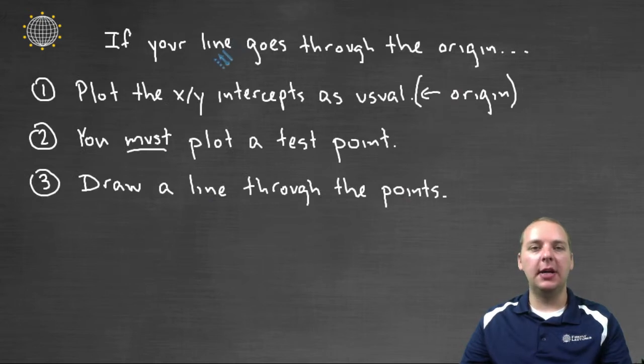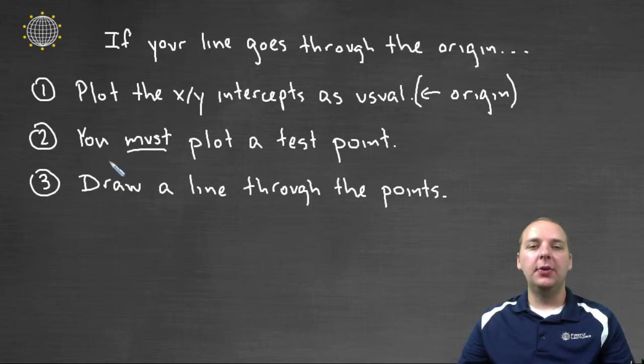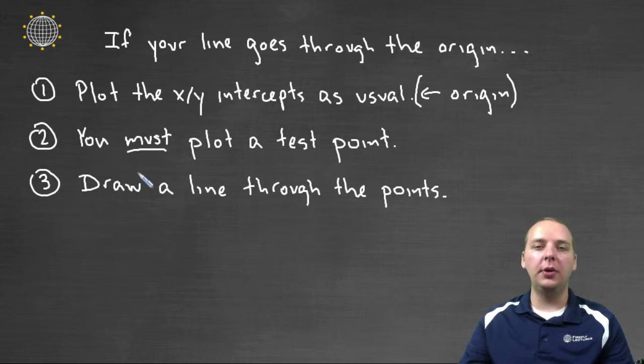So if we want to jot these down as some steps, it goes something like this. If your line goes through the origin, then what you'll do is you'll plot your x- and y-intercepts as you usually would. The only catch is that you'll realize that they're going through the origin. You'll see they're going through zero, zero. And so if you see that happening for your x- and y-intercept, and you only have one point drawn because the x- and the y-intercept are at the same location, then you must plot a test point.